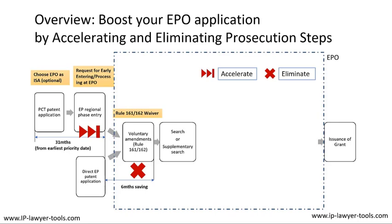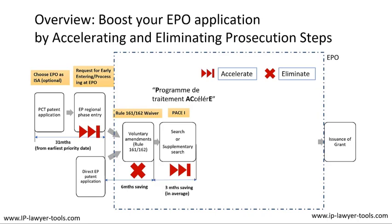After that follows the next step: a search or supplementary search, depending on what you requested as an ISA in PCT phase 1. Here comes the next option to accelerate prosecution at the EPO. You file a PACE request — I call it PACE 1 because there are actually two PACE requests you can file — again marked with the acceleration symbol. PACE stands for the French term Programme de Traitement Accéléré, with those letters highlighted in capitals. That saves you three months on average.